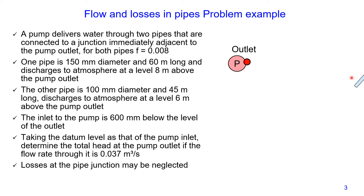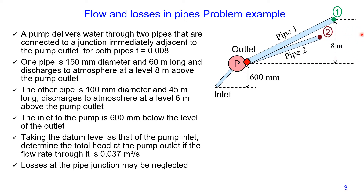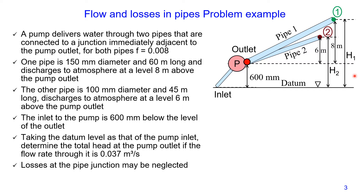We have a pump with an outlet, and we also have an inlet to the pump that is 600 mm below the outlet. We have two pipes. Pipe number one is connected to the outlet and discharges into the atmosphere, and the point where discharge occurs is 8 m above the outlet level. We also have pipe number two, where it discharges to atmosphere 6 m above the pump outlet. We take the datum at the inlet level. I also define total head for point number one where flow is discharging as H1, and total head for point number two where the second pipe discharges into atmosphere as H2.